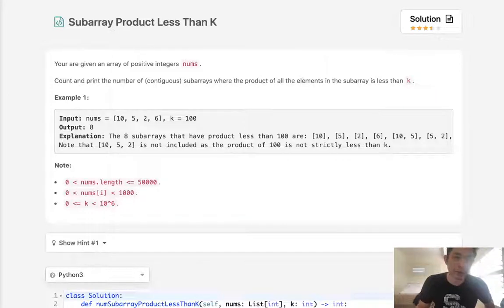Welcome to September's LeetCode Challenge. Today's problem is subarray product less than k.